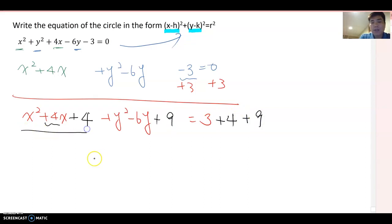Now factoring x trinomial, also factoring y trinomial, then you will get (x+2)² + (y-3)² = 16.